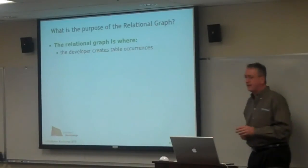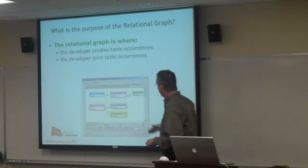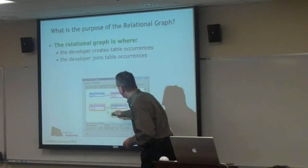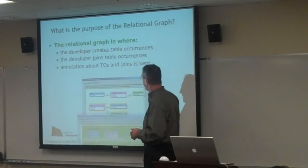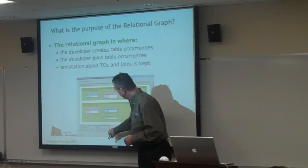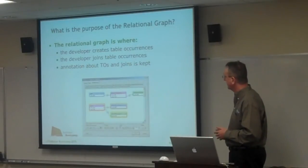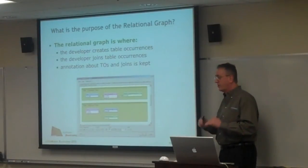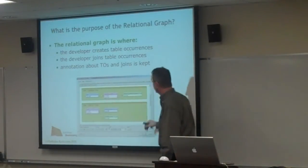The relational graph is where the developer does certain basic things. It's where you create table occurrences and join them. There are two table-occurrence groups that you can see are discrete. It's also a place where annotation or comments about the table occurrences in the groups is kept. Here you're seeing where I have taken the comment blocks available in the palette and colored them, putting them behind the table-occurrence groups to make it clear that it's a group. It gets very clear when I use colored blocks to highlight them, or shrink them up and put them above the table-occurrence groups and use them as breakers.